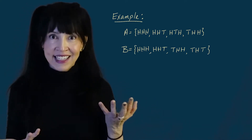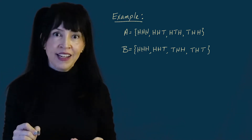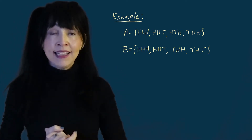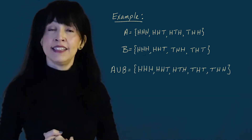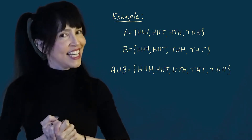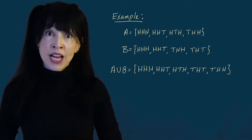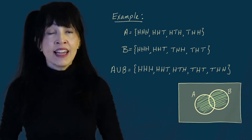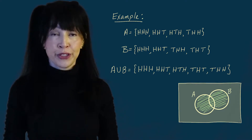Let's try it for our coin example. We have four elements in A and four in B, with some overlap. When you take the union, you don't necessarily get eight elements. The union is just the set describing everything that's in A or B or both — if both sets contain heads-heads-heads, you only list it once. Going through sets A and B and finding the union, we get five outcomes: heads-heads-heads, heads-heads-tails, heads-tails-heads, tails-heads-heads, and tails-heads-tails. We can visualize the union in a Venn diagram by shading everything that is in A or B or both, including the intersection region.